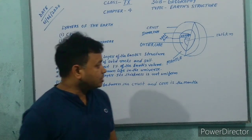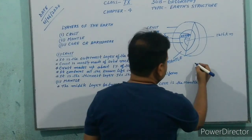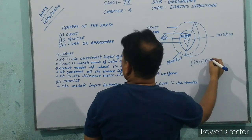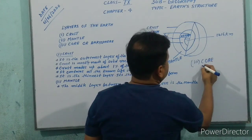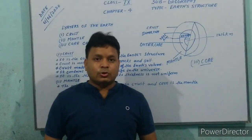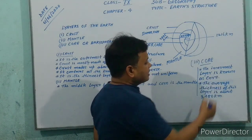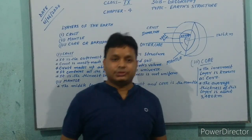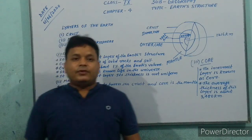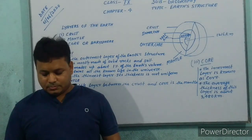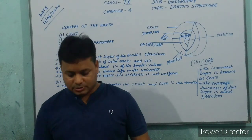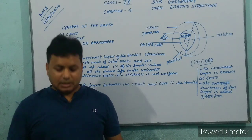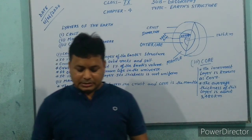Now I am going to teach about the core. The core is the third and innermost layer of the Earth. The average thickness of this layer is about 3,480 km. About 15% of the Earth's volume is made of the core. The density of the core varies between 9.1 grams per centimeter cube to 12.1 grams per centimeter cube.